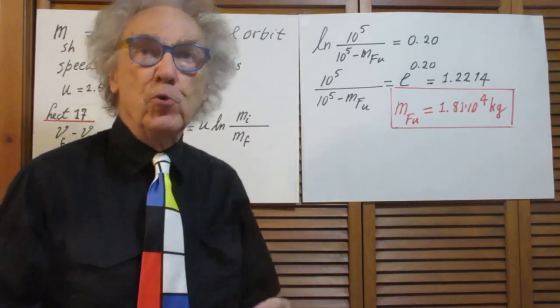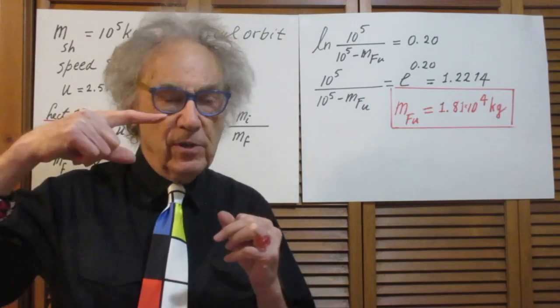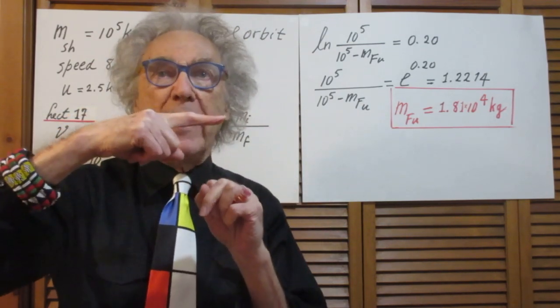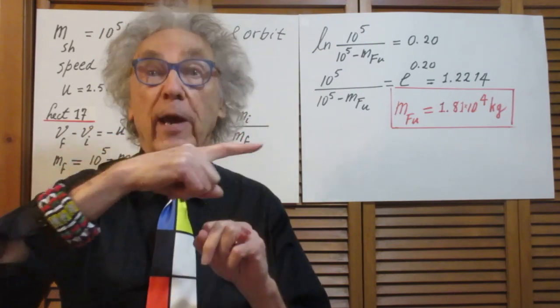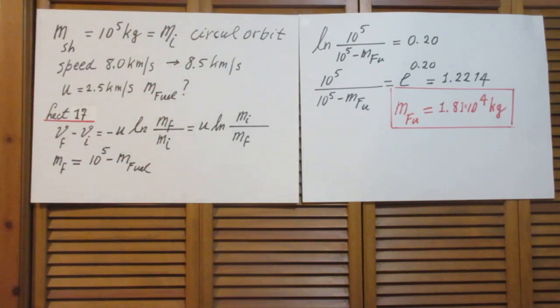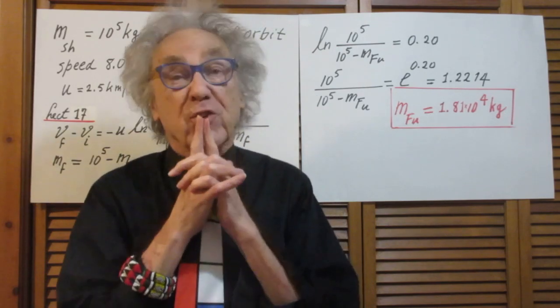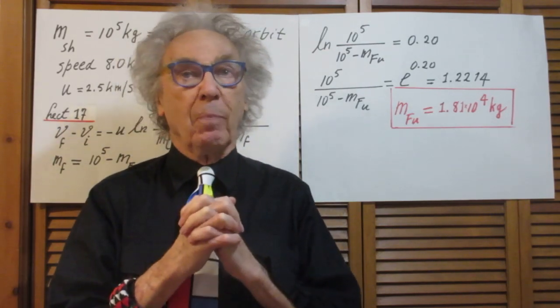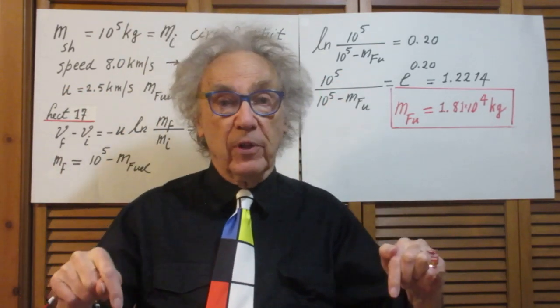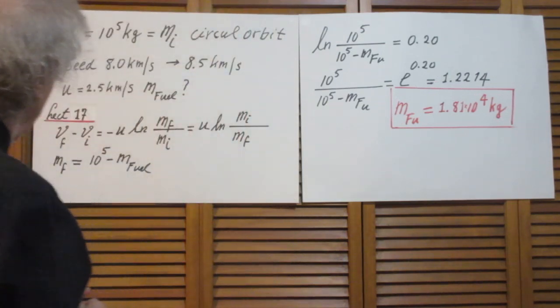I want to increase the speed of the shuttle in the same direction that it's flying. So it moves in this direction. I want to increase that speed from 8.0 kilometers per second to 8.5 kilometers per second. The exhaust gas speed coming out of the rocket relative to the rocket is 2.5 kilometers per second. I call that U.